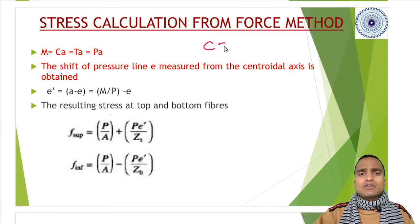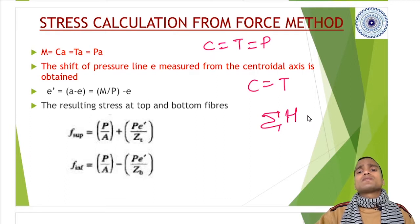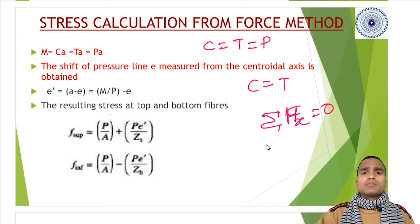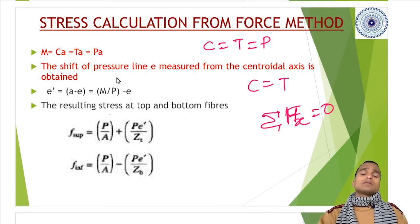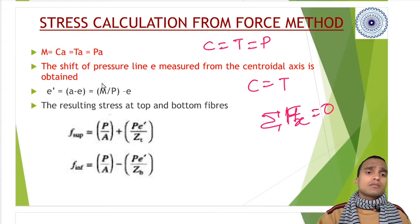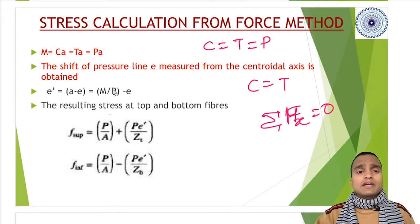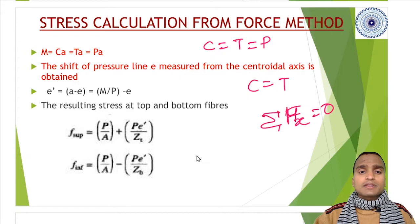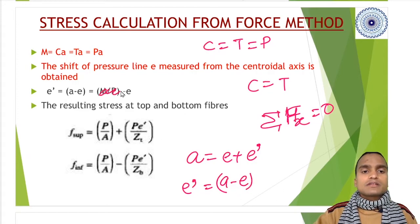Stress calculation becomes easy: M equals Ca equals Ta equals Pa. C is always equal to T equals pre-stressing force P. The moment magnitude will be compressive force times lever arm, or tensile force times lever arm. Both equal P, and e' is the value where a equals e plus e', so e' equals a minus e.